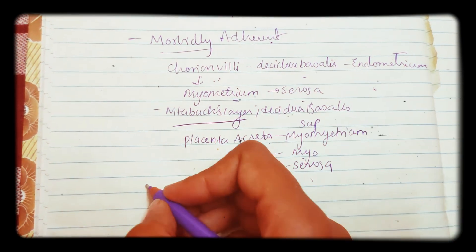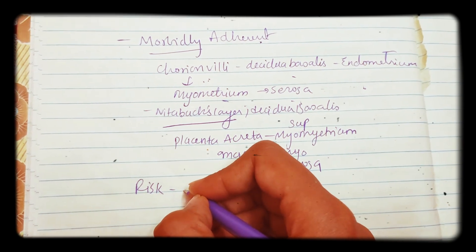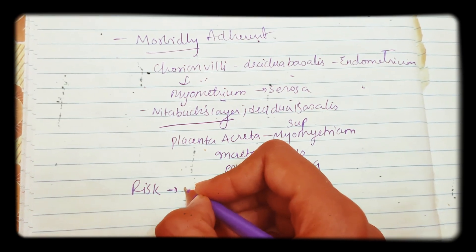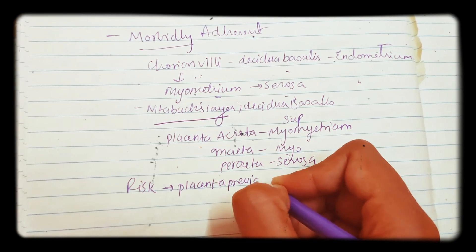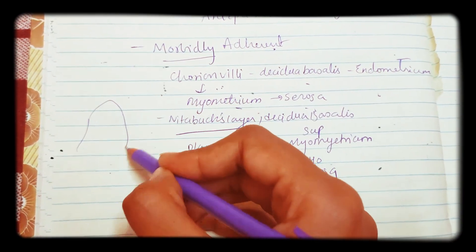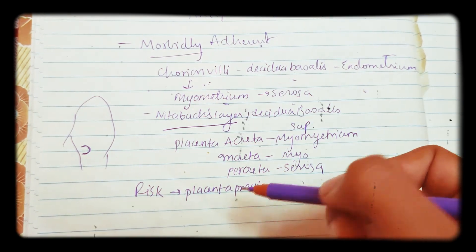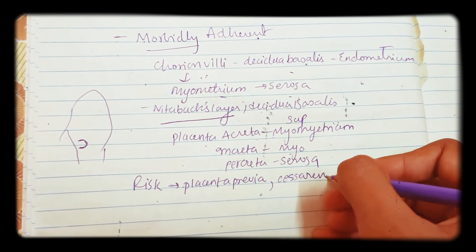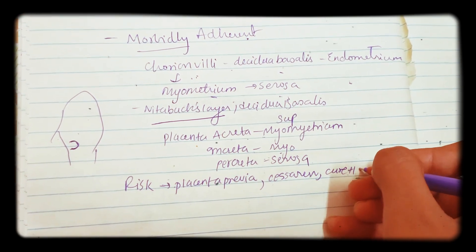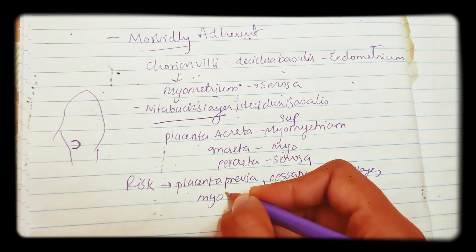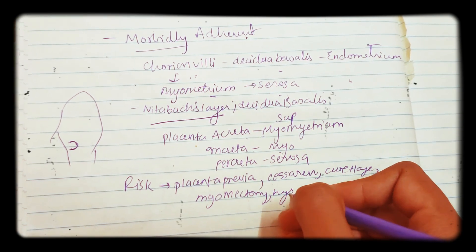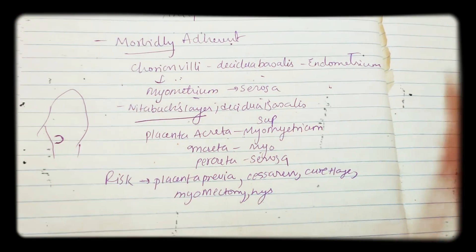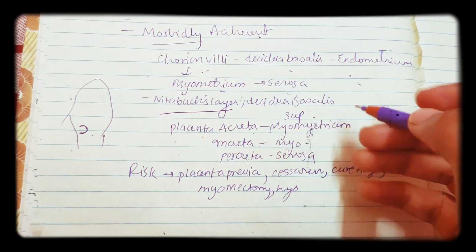What are the risk factors? The most important is placenta previa — placenta located in the lower uterine segment. If someone already has placenta previa, they have a very high risk factor. The second most important is previous history of caesarean section. Other risk factors include previous history of curettage, myomectomy, and hysterectomy. All these can lead to placenta accreta, increta, or percreta.